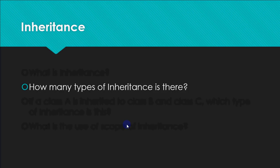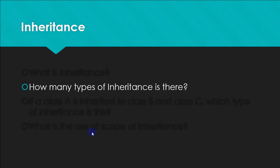There are five types of inheritance. Single inheritance: one base class and one derived class, like rectangle inherited to cuboid. Multi-level inheritance: class A inherited to B, and B inherited to C, where B is called the intermediate base class. Multiple inheritance: more than one class inherited to a single class. Hierarchical inheritance: one class inherited to two or more subclasses. And if we combine all these types in some form, that is called hybrid inheritance.